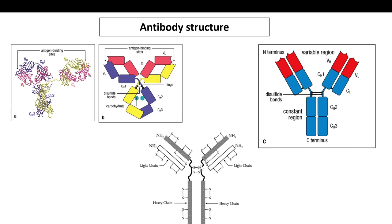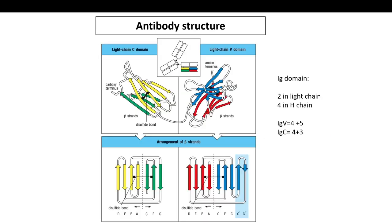Reducing agents are required to reduce these disulfide bonds and make them single polypeptide chains. The constant region is constant for a single species with no variability, and it is responsible for mediating biological function. The variable region is responsible for recognition, and the constant region is responsible for biological function.